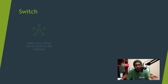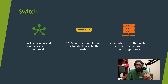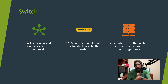We also have switches, which add more wired connections to your network. Basically a Cat5 cable connects each network device to a switch, and then one cable from the switch provides uplink connectivity to the router and gateway to provide more access to the other ports on that switch.